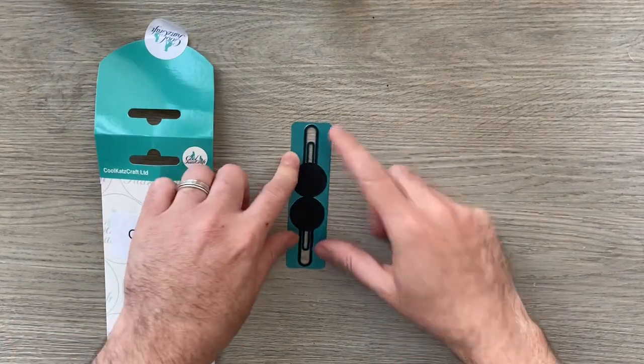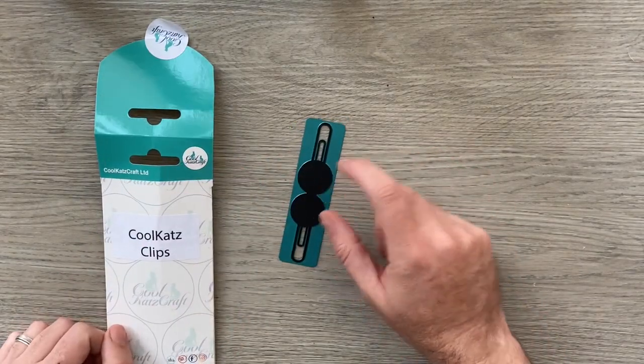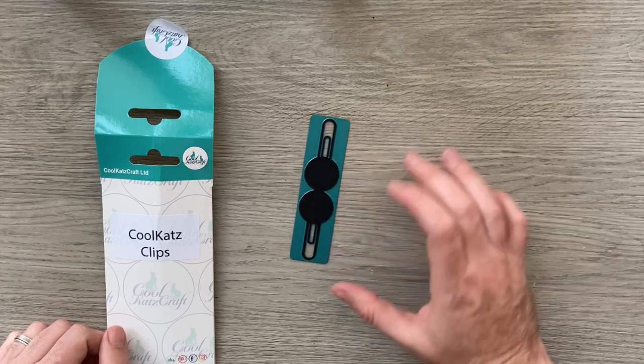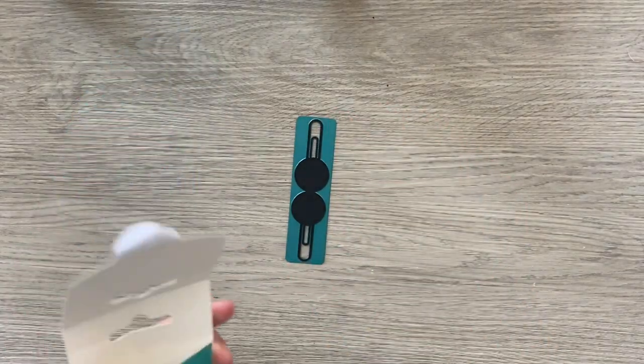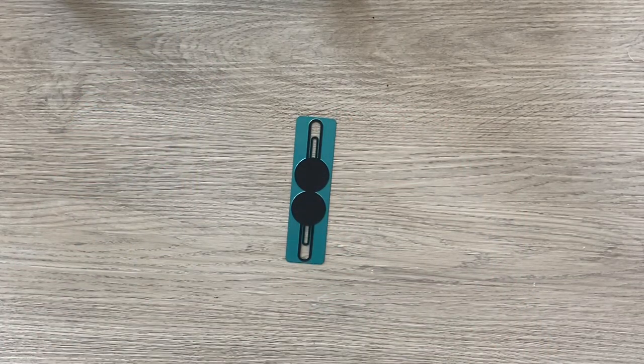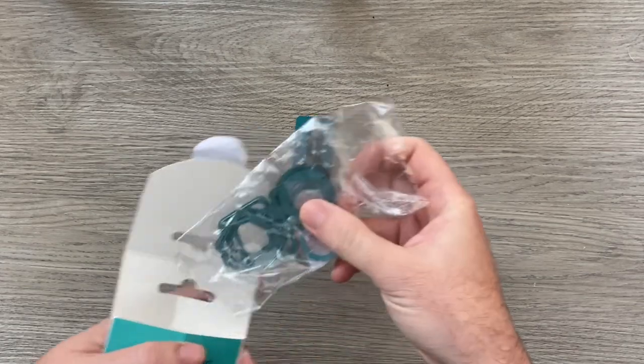So when you open your package you get your main one. I've already got a piece of black tongue where yours won't come with a piece already in. I thought oh brilliant but no there was more.